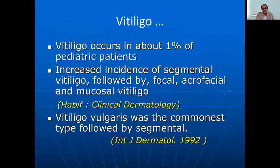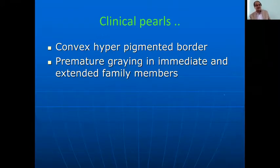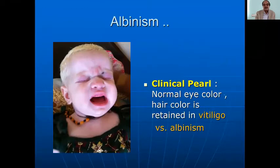The clinical pearls for vitiligo are complete depigmentation with convex borders, and premature graying in the immediate or extended family. Compared to vitiligo, albinism is congenital and the clinical pearl is that normal eye color and hair color are retained in vitiligo. If you find changes in eye color and hair color, you are dealing with albinism.